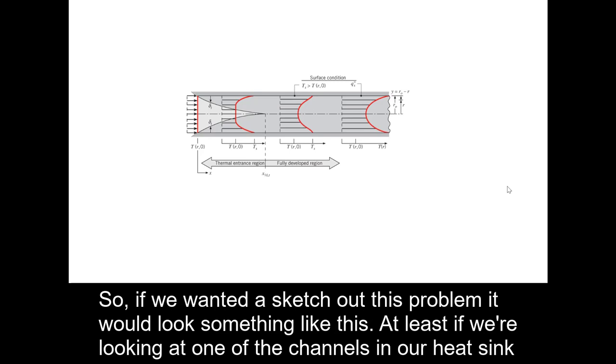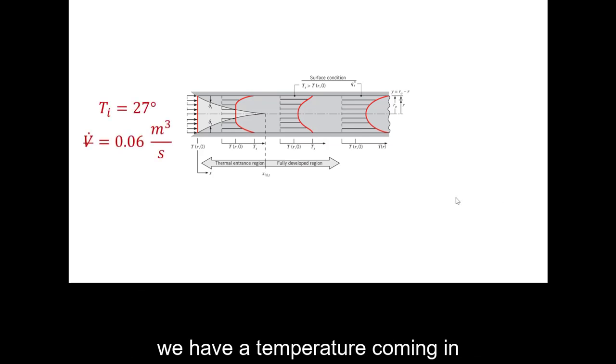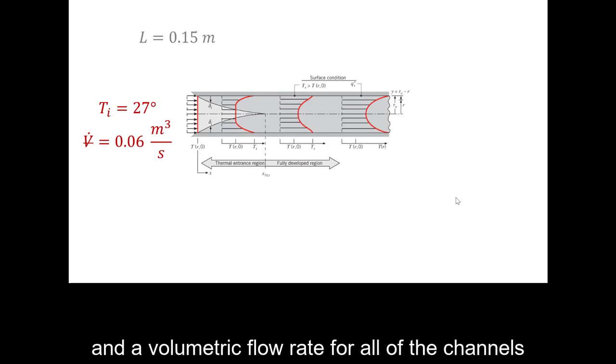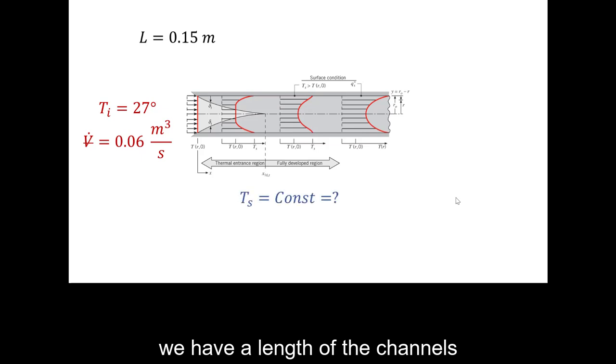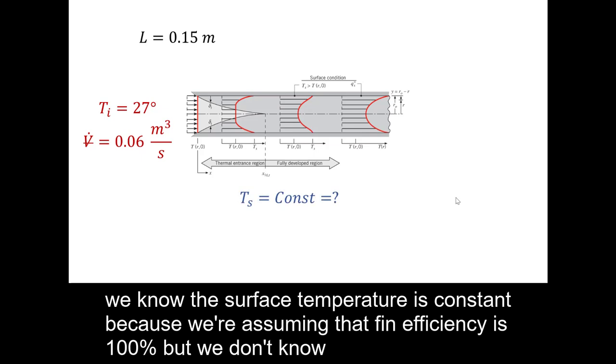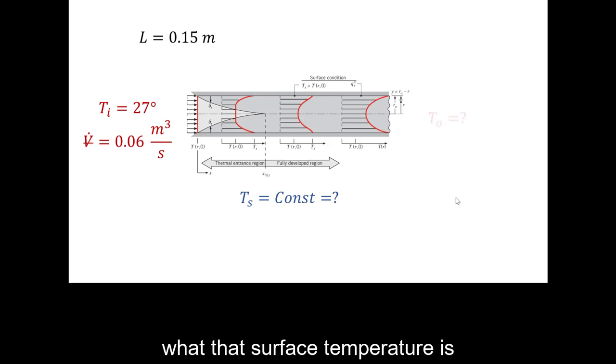So if we wanted to sketch out this problem, it would look something like this, at least if we're looking at one of the channels in our heat sink. We have a temperature coming in and a volumetric flow rate for all of the channels. We have a length of the channels. We know that the surface temperature is constant because we're assuming the fin efficiency is 100%, but we don't know what that surface temperature is.